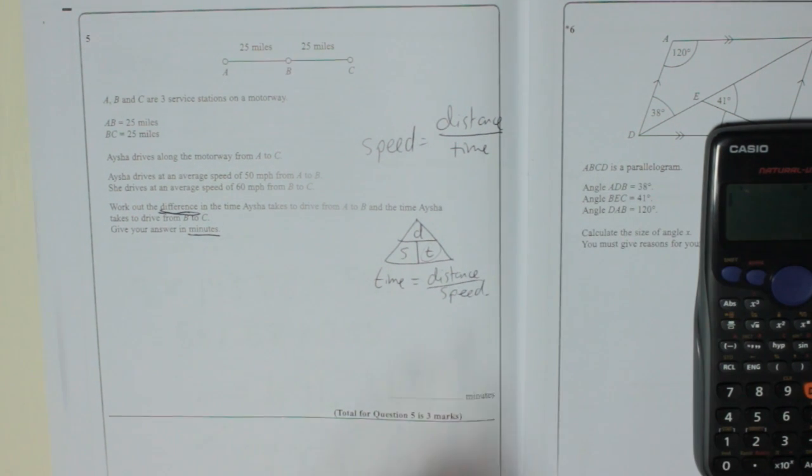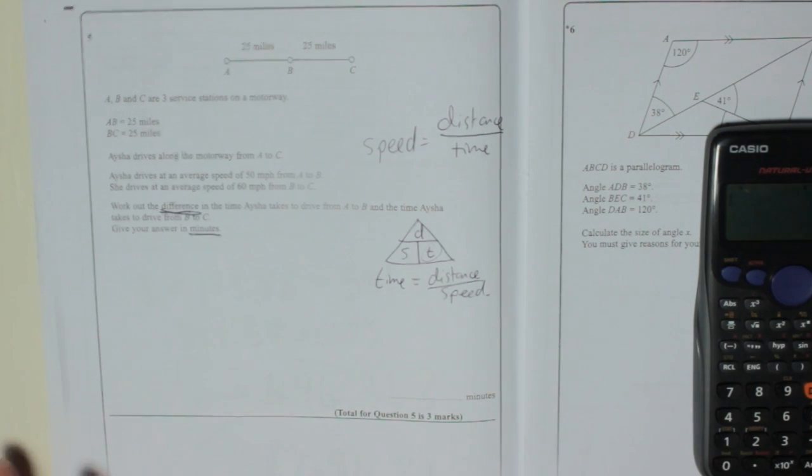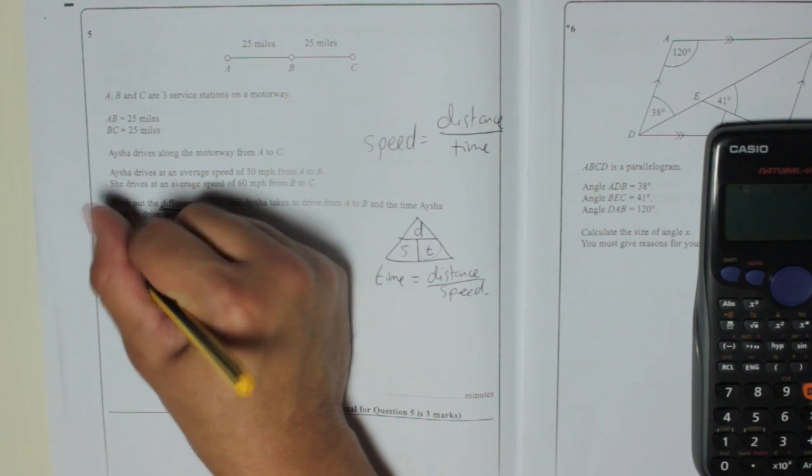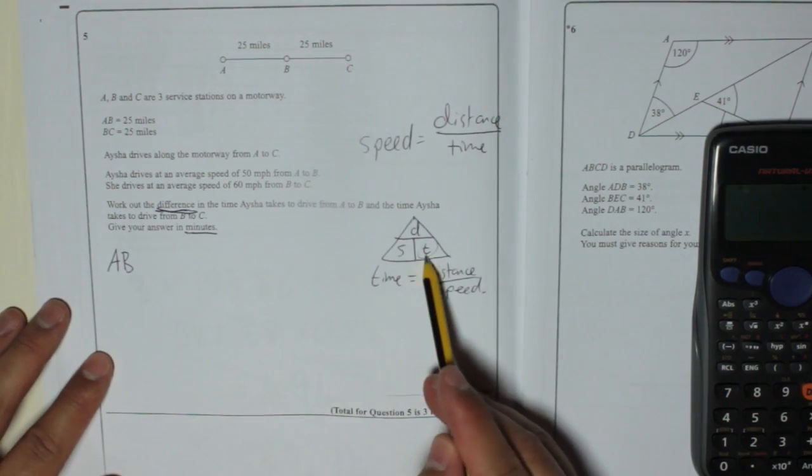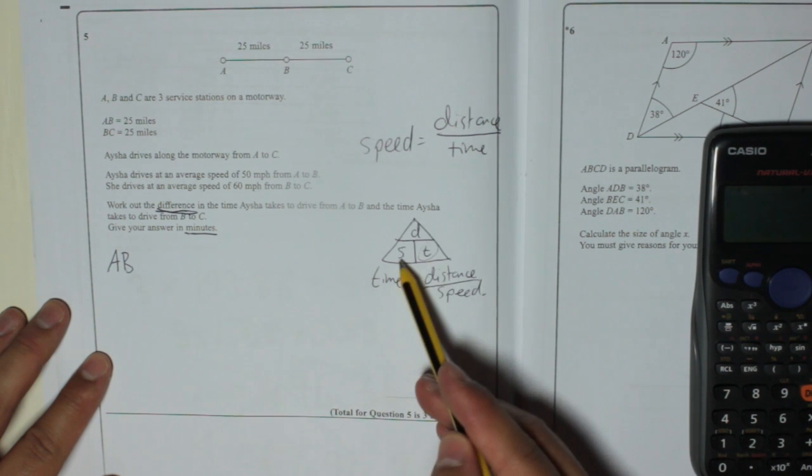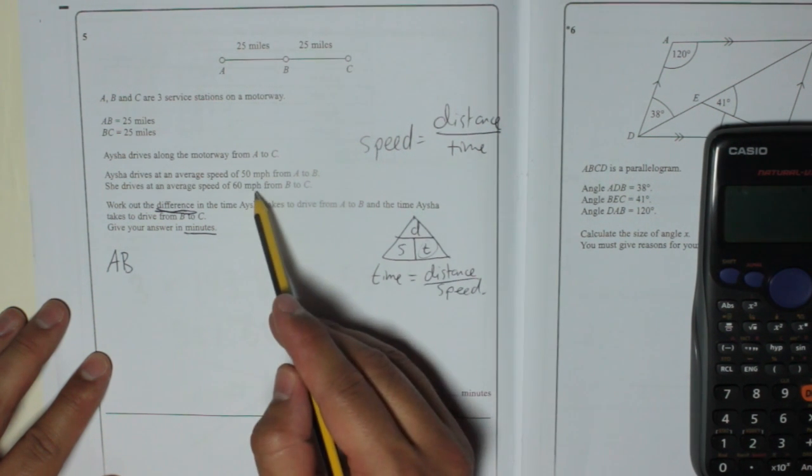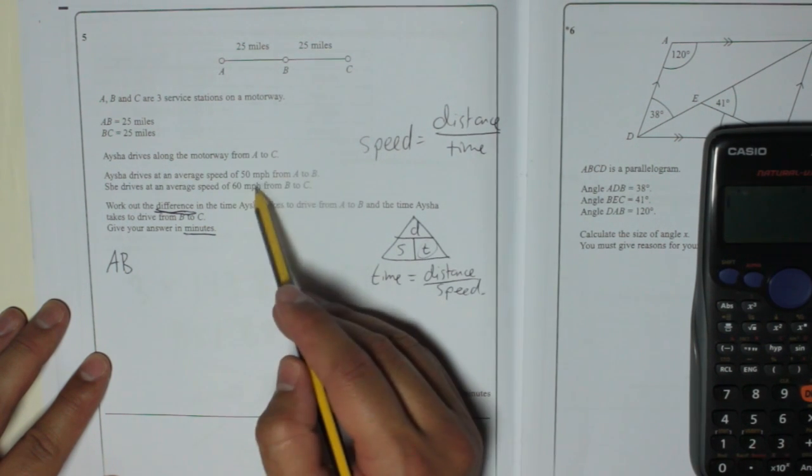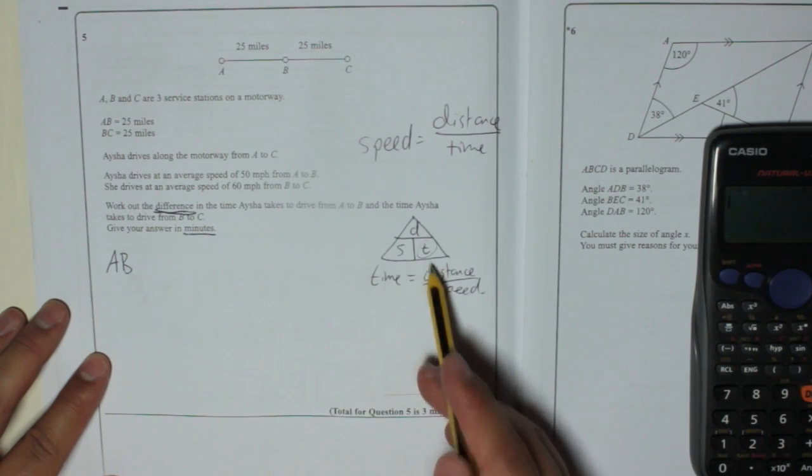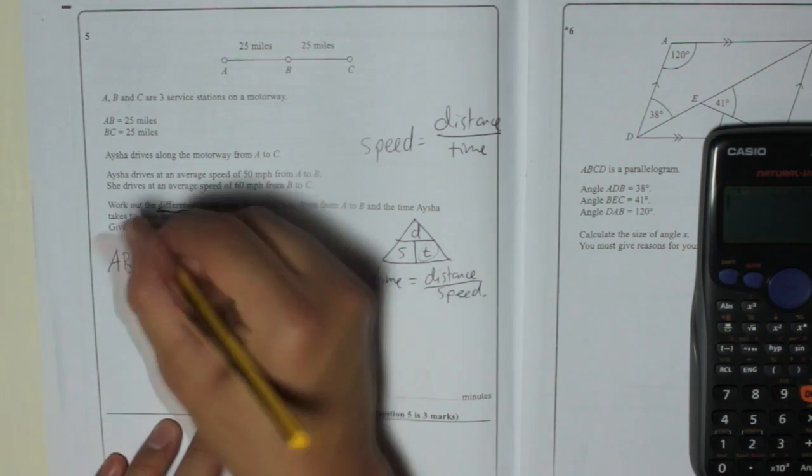And we're going to use that to work out our times. So A to B: time we want is distance divided by speed. Distance is in miles, the speed is in miles per hour, which means the time we get is going to be in hours. So A to B...